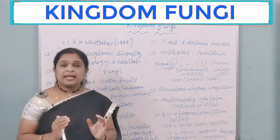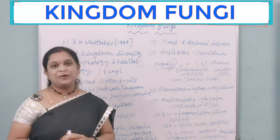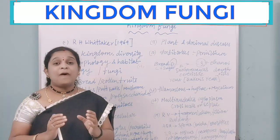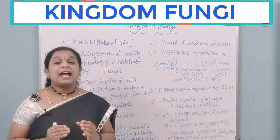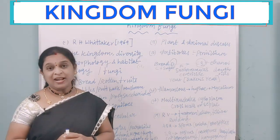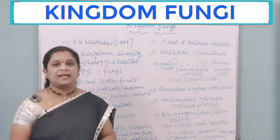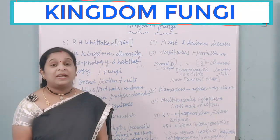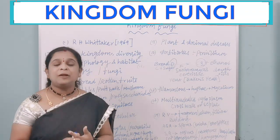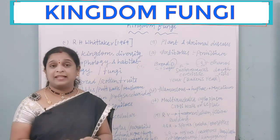The second point about fungi is that it is a eukaryotic organism. Eukaryotic organisms are those which consist of a nucleus bounded by a nuclear membrane. Prokaryotes consist of a nucleus but it is not covered by a nuclear membrane. Fungi have a membrane-bound nucleus, making them eukaryotic.